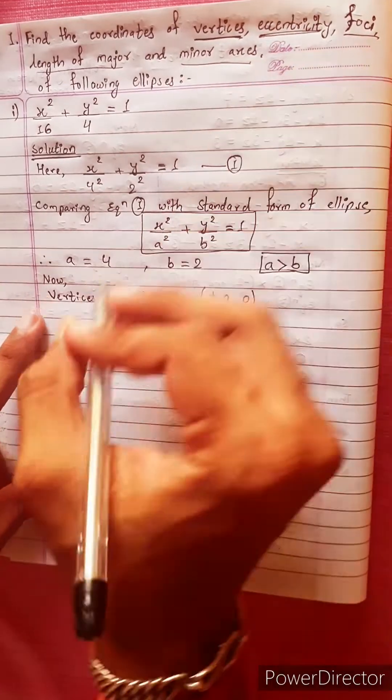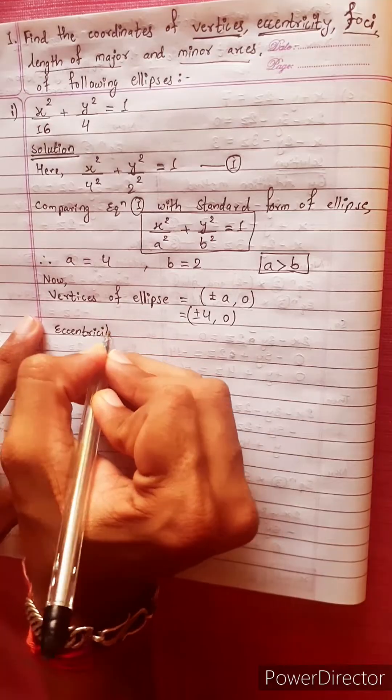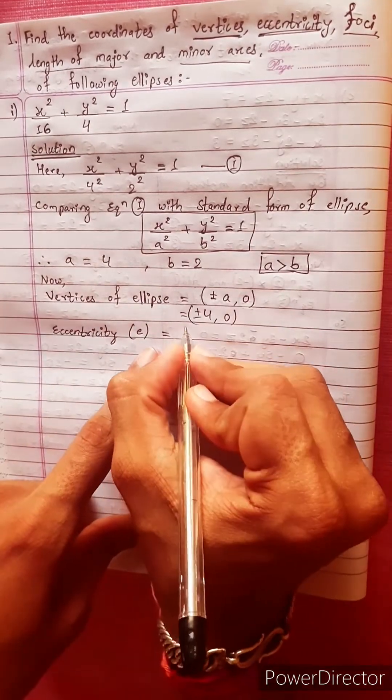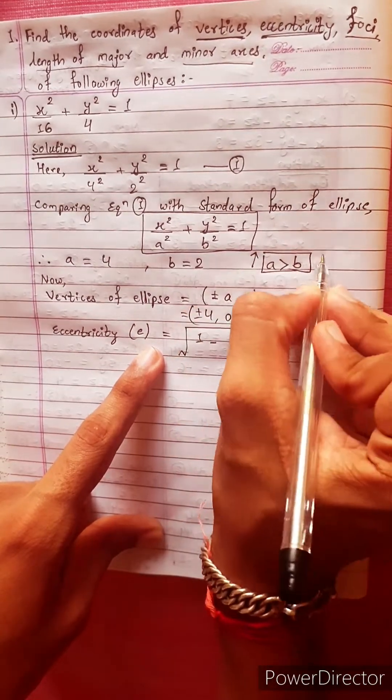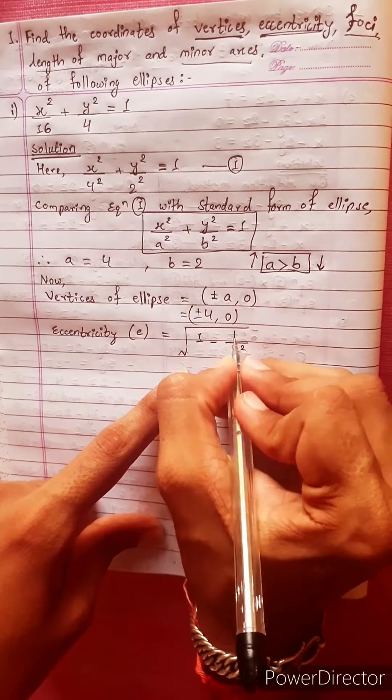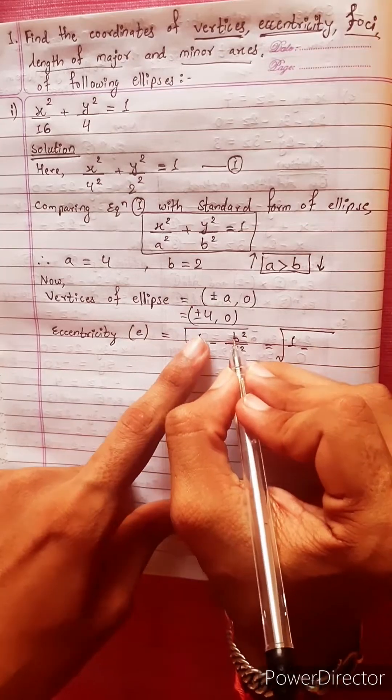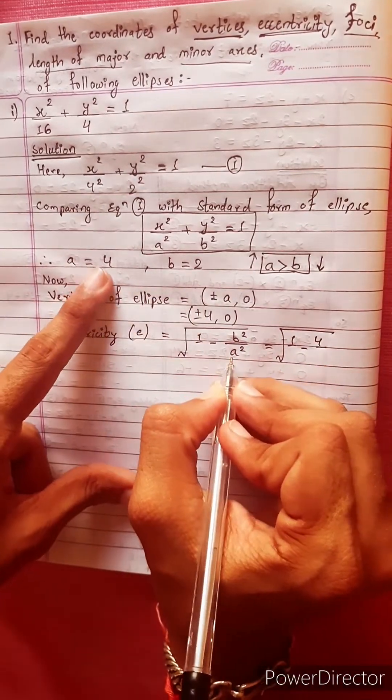Now eccentricity, represented by small e, equals to the formula under root 1 minus b squared over a squared. Equals to 1 minus 2 squared over 4 squared, which is 4 over 16.